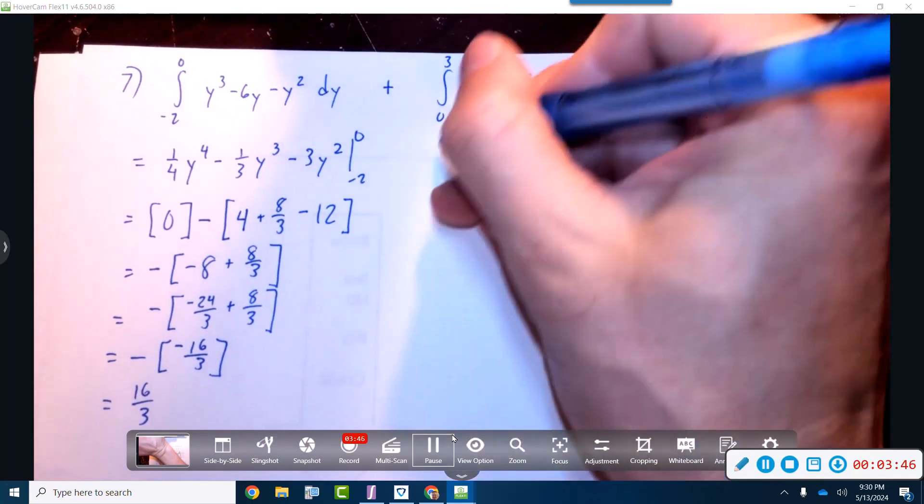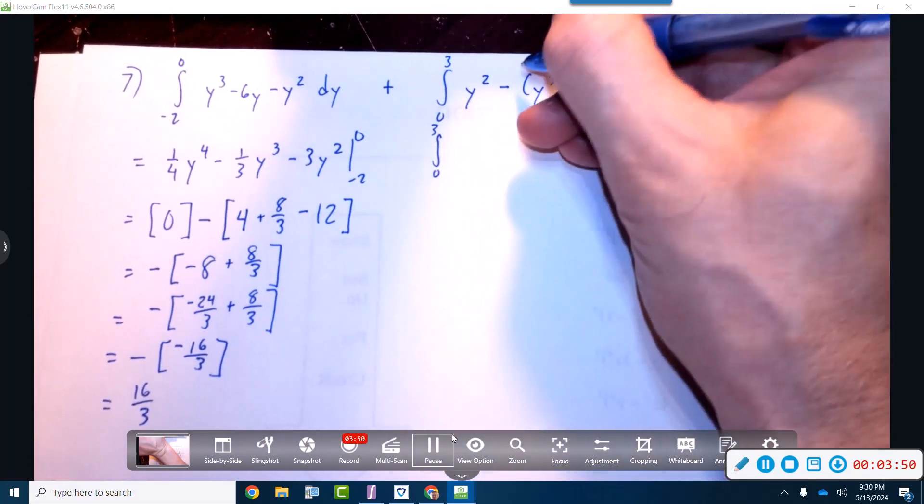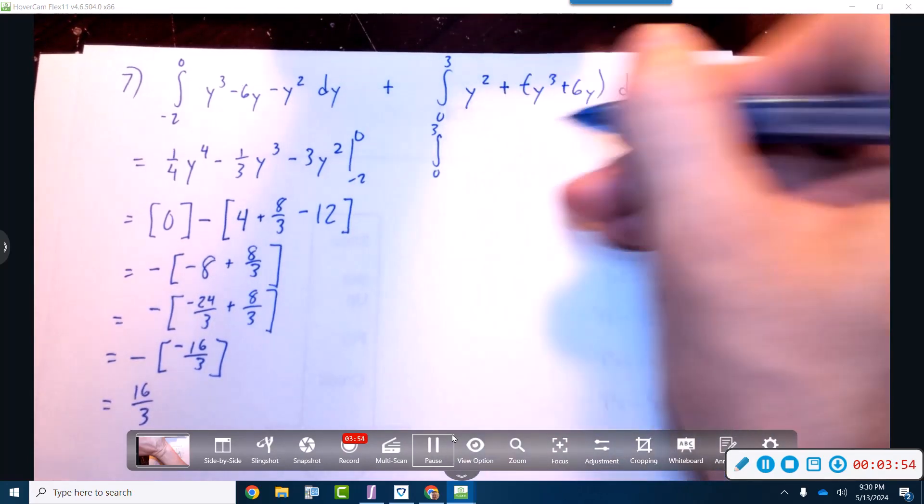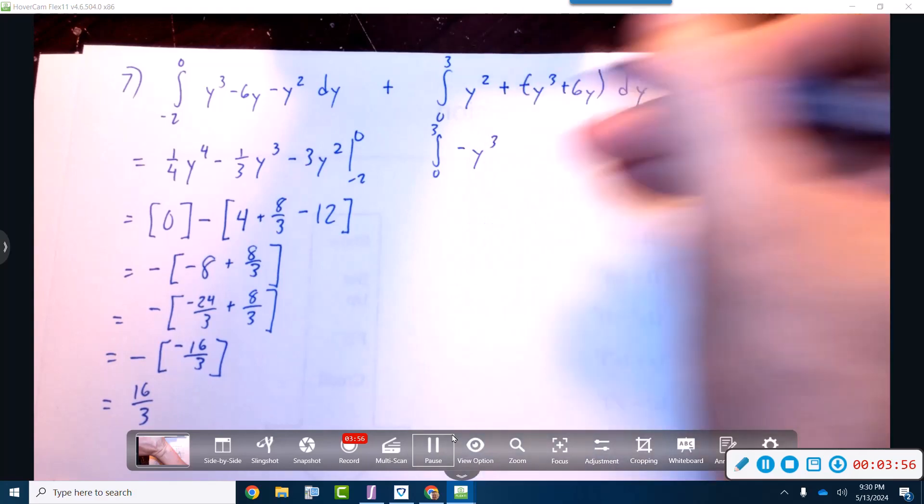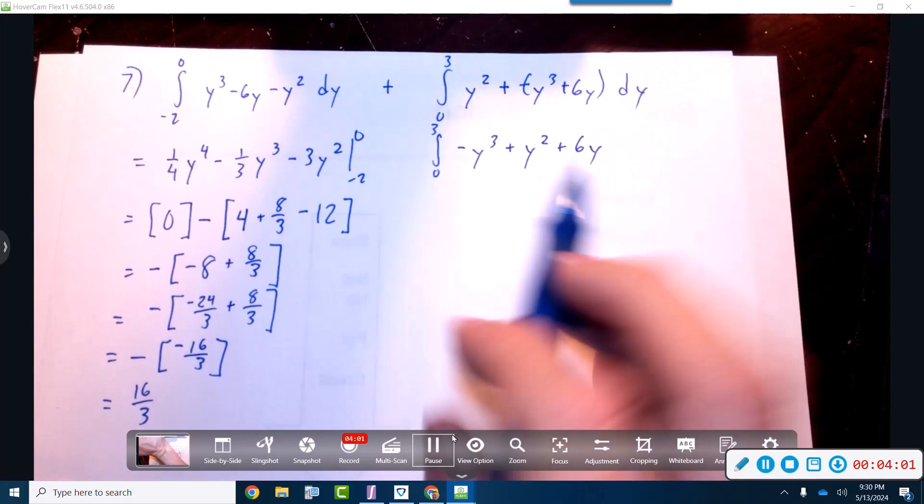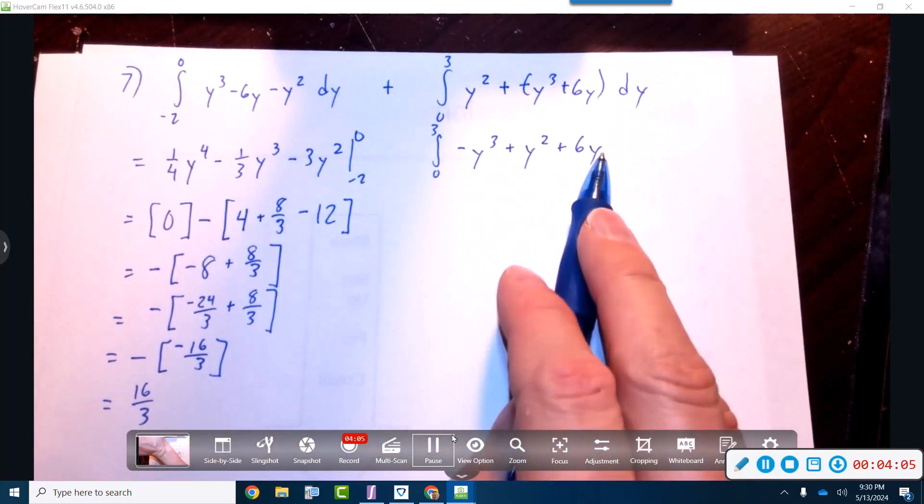We're going to go ahead and distribute this guy, so he'll become a negative and then he'll become a positive. So a negative y to the third, plus y squared plus six y. It should be the exact opposite of what this was. Good, that's what we got.